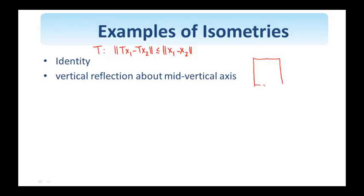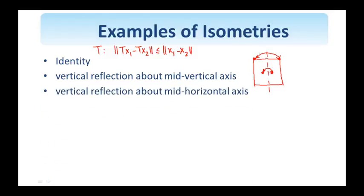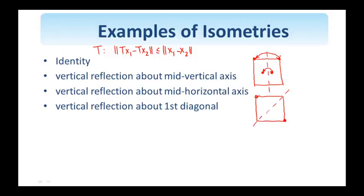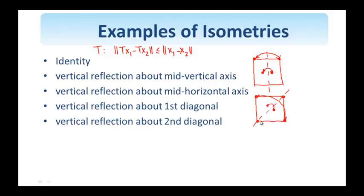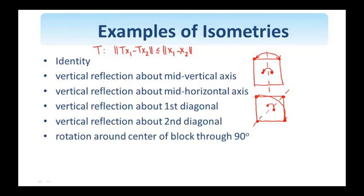Given a patch like this, here is the mid-vertical axis, and therefore this pixel switches places with this one. This pixel switches places with this one. Reflection about the mid-horizontal axis. It's easy to see. Reflection about the first diagonal. So, if this is the patch or the block, here is the first diagonal. And therefore, this pixel switches places with this one. This switches places with this one. This remains the same. This remains the same. Reflection about the second diagonal in a similar manner.